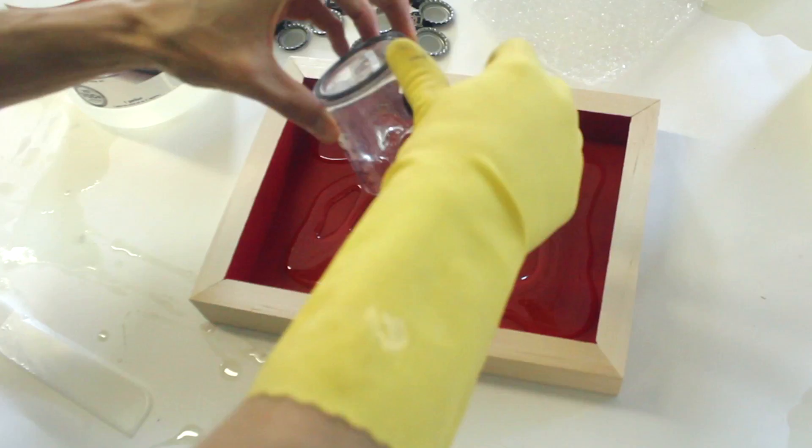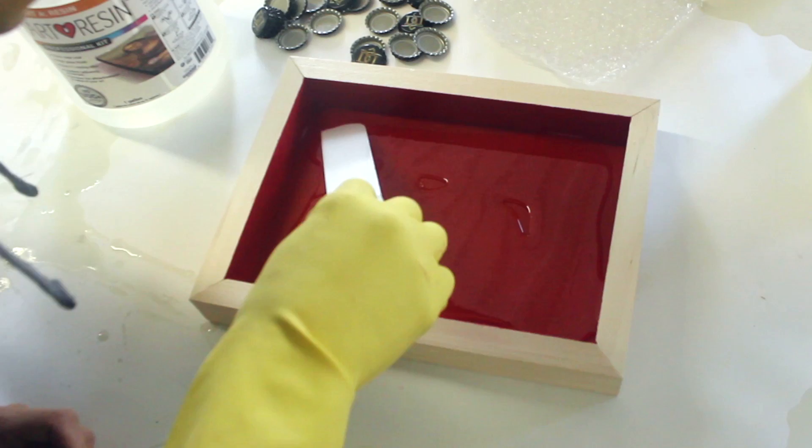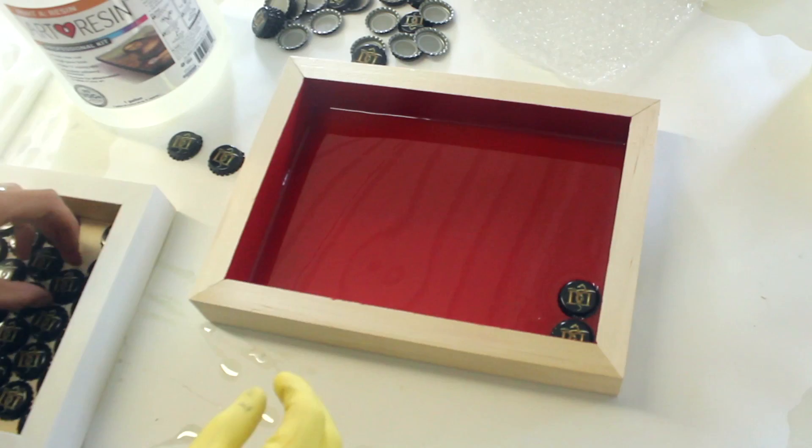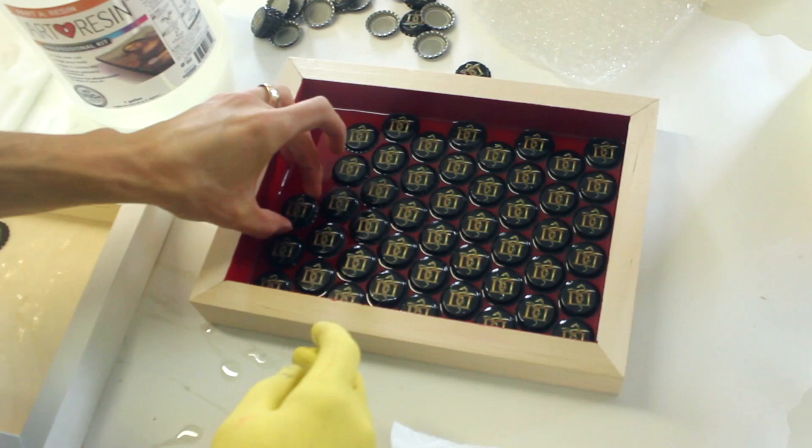So this first pour is shallow, just to get all the beer caps stuck in the right place. You just set them in the wet resin and you have 45 minutes of working time. So when they're all in place you just let it sit overnight.